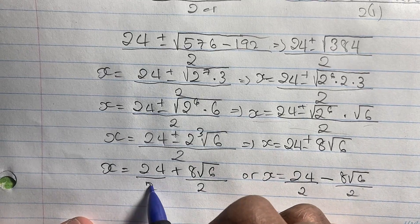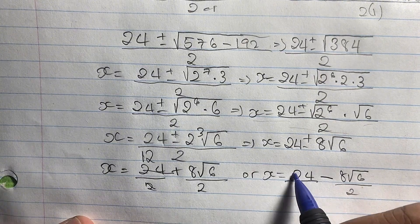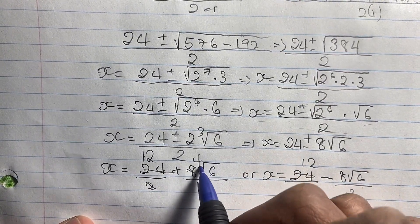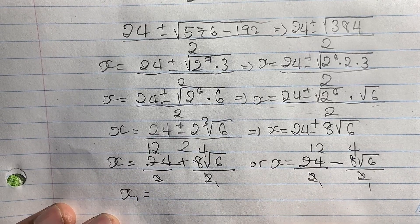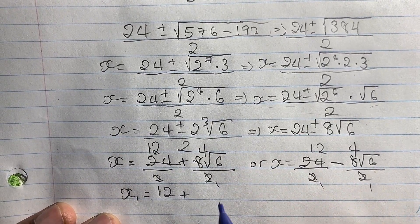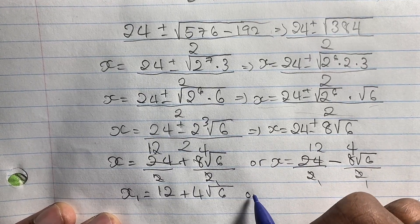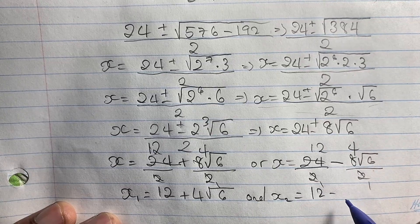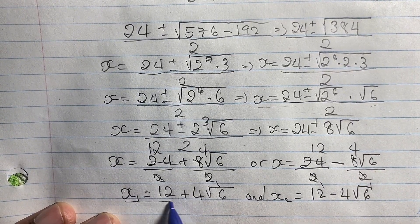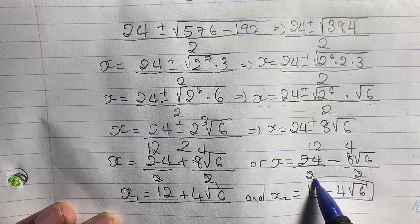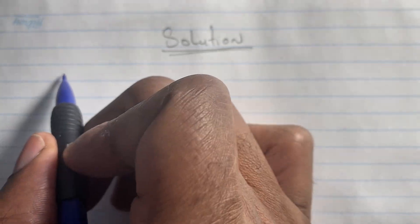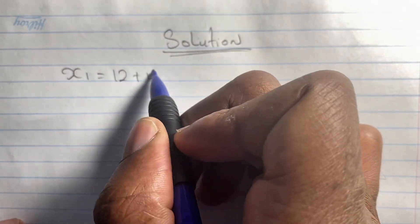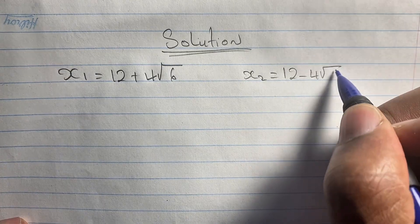We therefore have two solutions for x. For our first solution: x equals 24 over 2 plus 8 root 6 over 2, which simplifies to x equals 12 plus 4 root 6. And for our second solution: x equals 24 over 2 minus 8 root 6 over 2, which simplifies to x equals 12 minus 4 root 6.